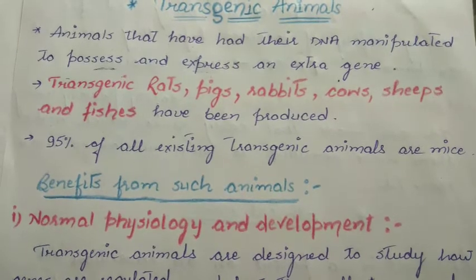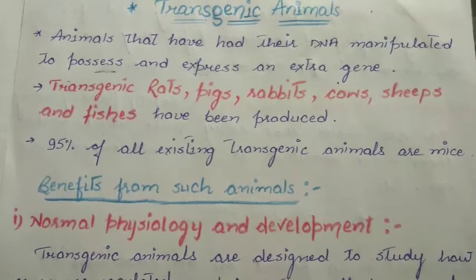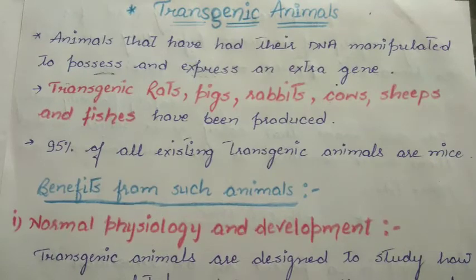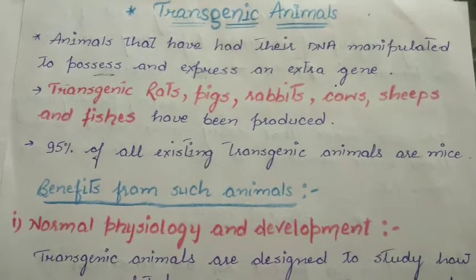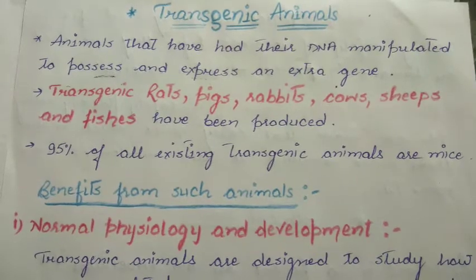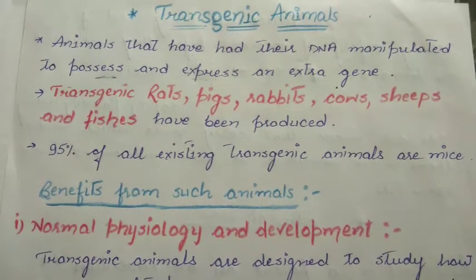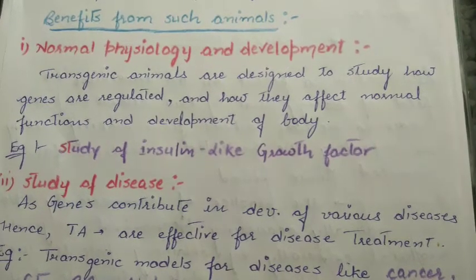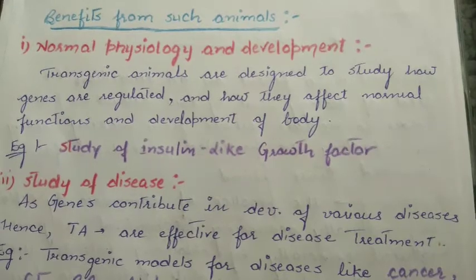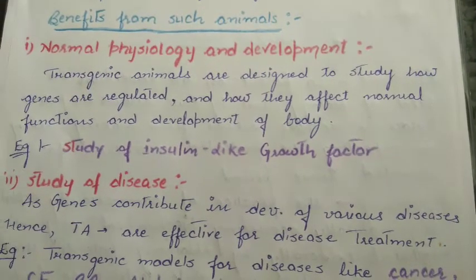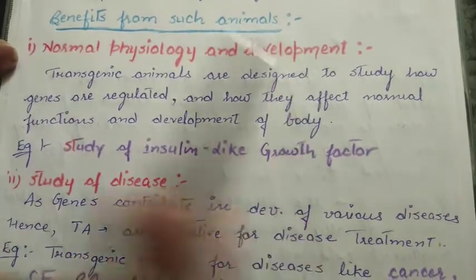Mice are very beneficial for us because if we have to detect any medicine, drug, or any kind of compound in the human body, we first conduct experiments on mice. The results obtained from mice help scientists to work on human beings. Now that we have generated and produced transgenic animals, what are the benefits of these animals?